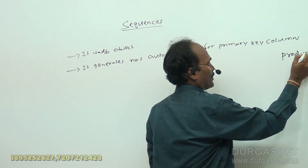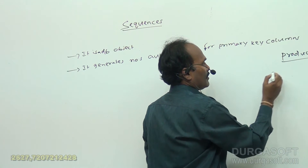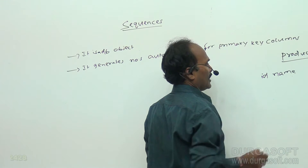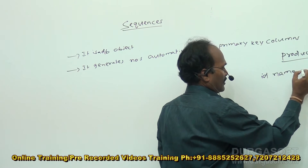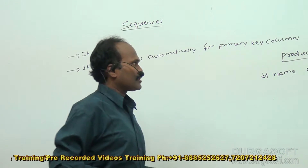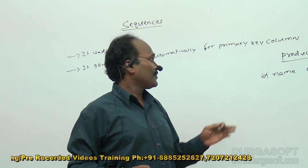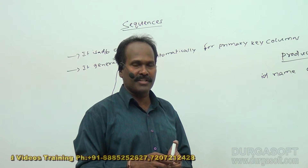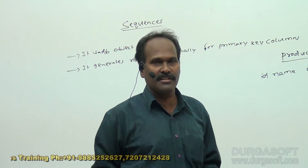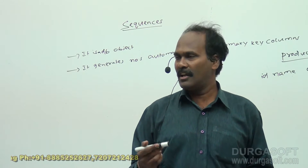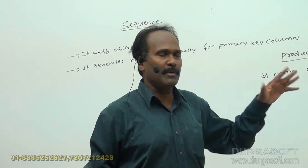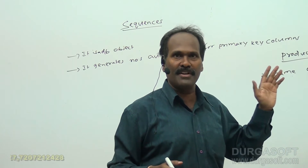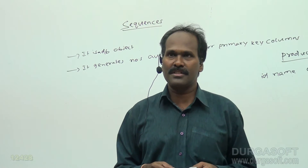Imagine we have one table called product with columns like ID of the product, name of the product, and cost of the product. Once the product table is created, for the ID column you need not insert any data — automatically the values will be taken from the sequence. Think of some online orders or online reservations where you supply your name, identity, age, qualification, etc., and automatically a number will be generated by the system. In order to generate numbers by the system, you make use of the database object called sequences. The purpose of a sequence is to auto-generate numbers for primary key columns.